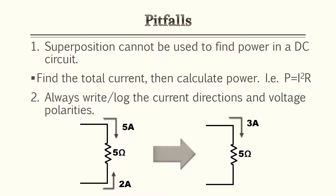There are a few areas of caution when using superposition theorem. First, superposition cannot be used to find power in a DC circuit — it's best to find the total current first and then calculate power from those variables. Second, it's always best to write down the current directions and voltage polarities, as it's very easy to throw off your calculations with the wrong current direction or voltage polarity.